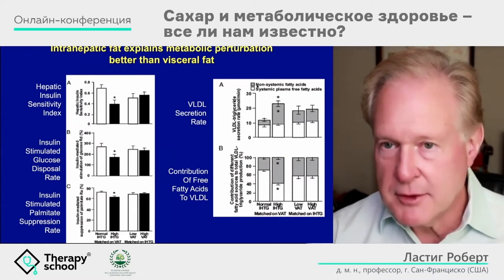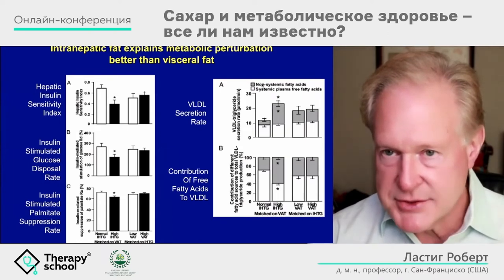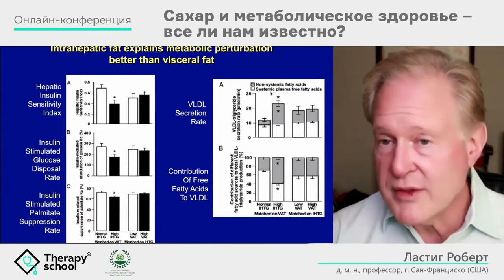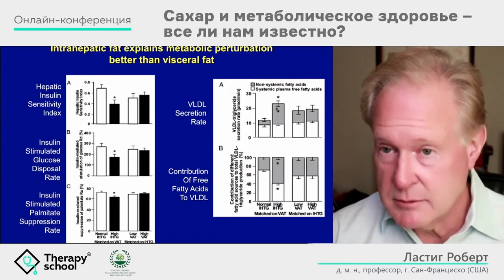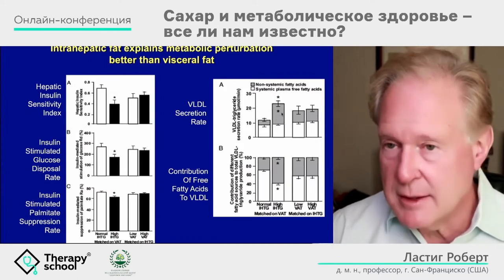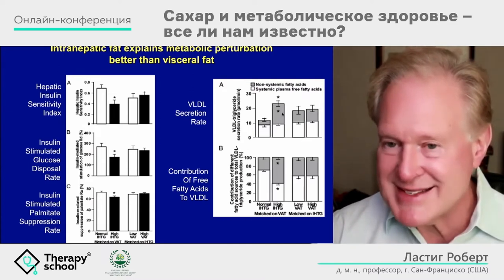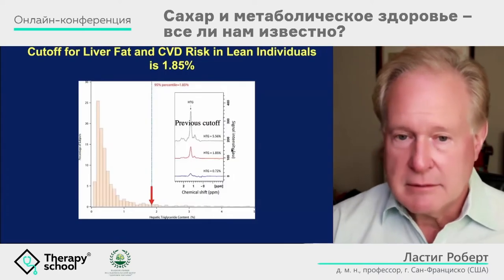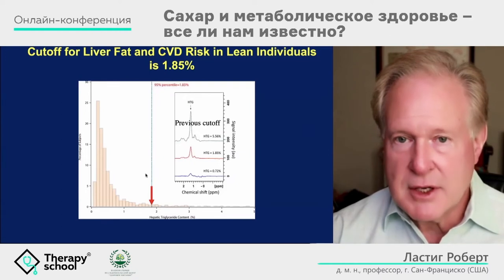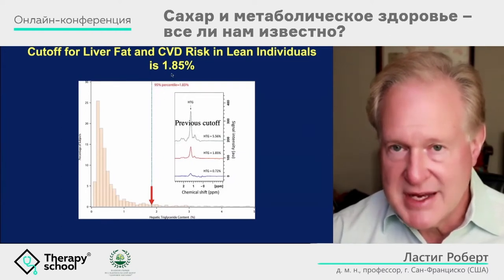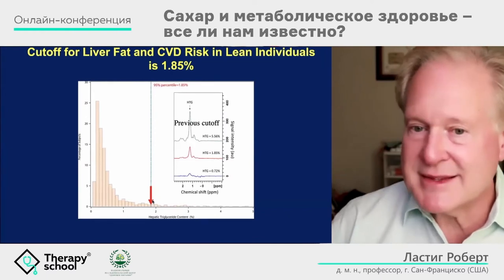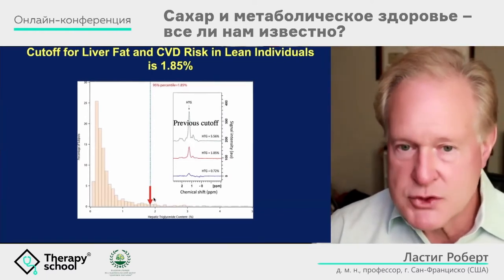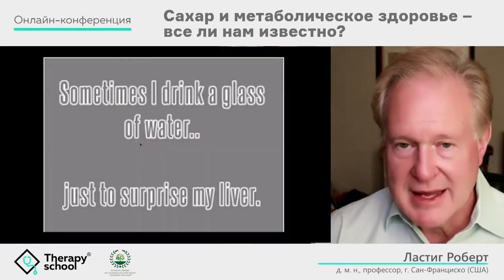So where is that fat coming from? It is coming from non-systemic fatty acids — fat being made right inside the liver, through de novo lipogenesis. Systemic fatty acids come from the diet or from lipolysis of adipose tissue, as in type 2 diabetes. Even up to 1.85% liver fat can show signs of metabolic syndrome. The liver was not designed to store fat, and it is now storing fat — that is why we are all getting sick.